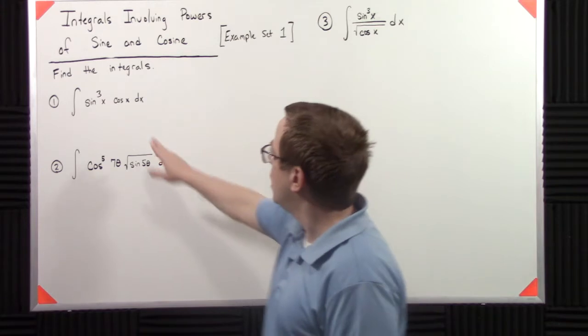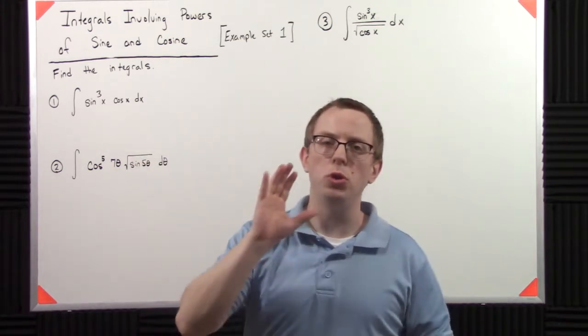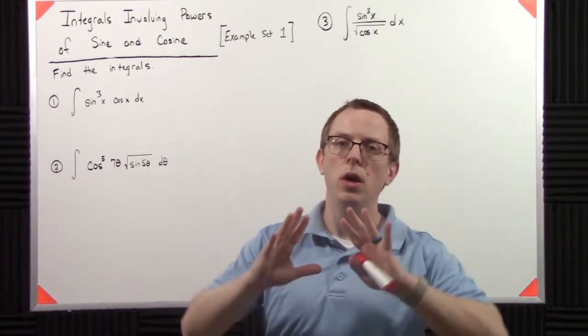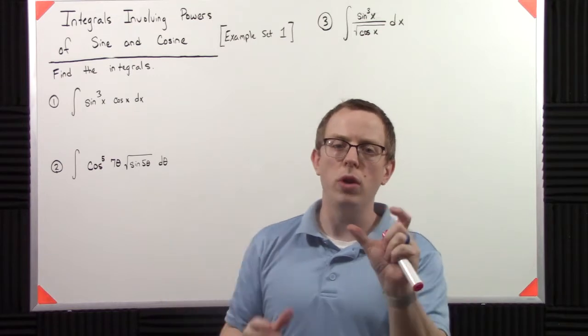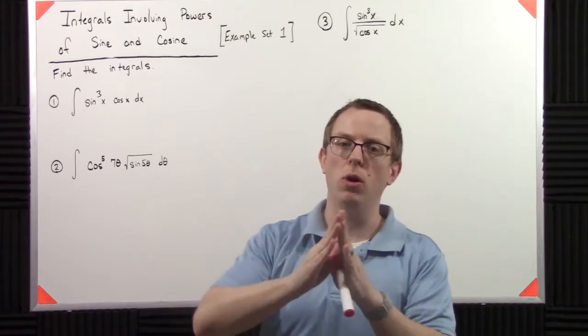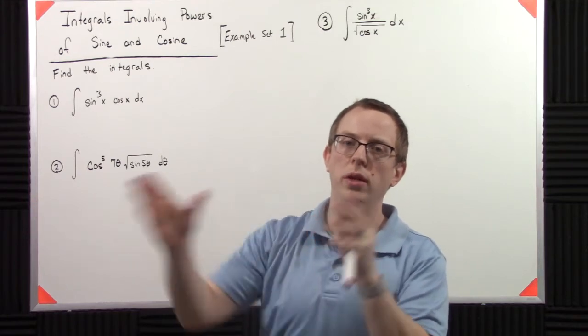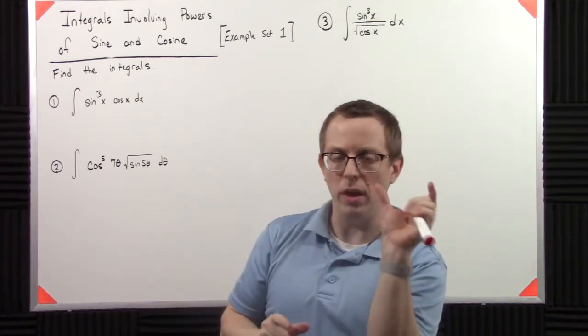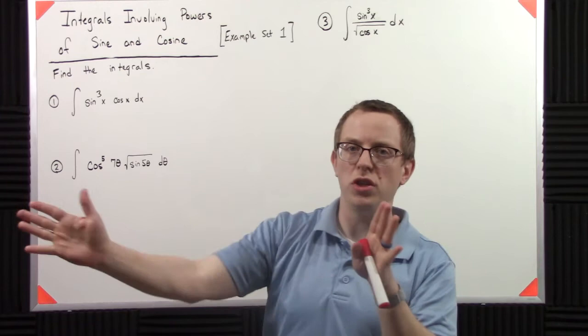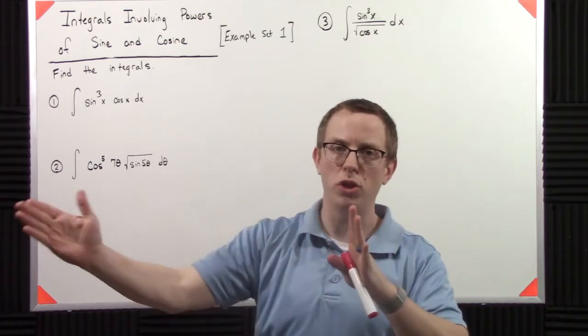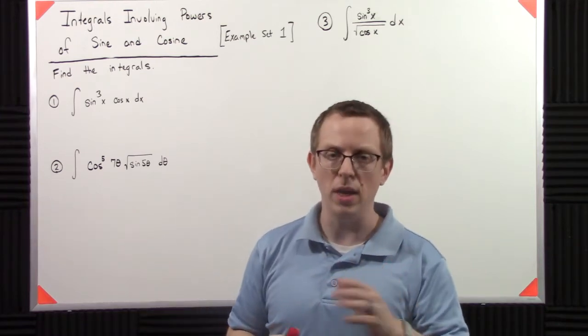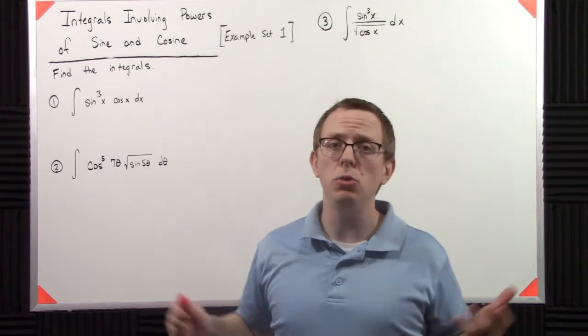In this particular case, if one of them has already been reduced to single power, we want one trig function to be in a single power, and then all of the other trig functions can be whatever they want. But we need, if we have one cosine alone and a bunch of sines, or one sine alone and a bunch of cosines, that's okay.